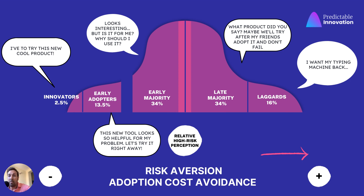The market starts on the left with the innovators, and then it goes all the way right through early adopters, then the early majority and the late majority. As you can see, early majority and late majority together are 68% of the population in a given market category — that is the mainstream. And then finally, the last ones to try a technology or product are the laggards.